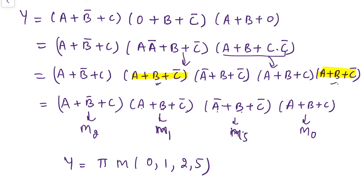So this is how we can change non-standard forms to standard forms. This can be extended to four variables — we need to use the same steps in that case also. In the next videos I will move on to K-maps, which is a technique more useful for minimization of Boolean expressions compared to the use of Boolean laws. If you found this video helpful, please subscribe to the channel, like this video, and share it with your friends. Thanks for watching.